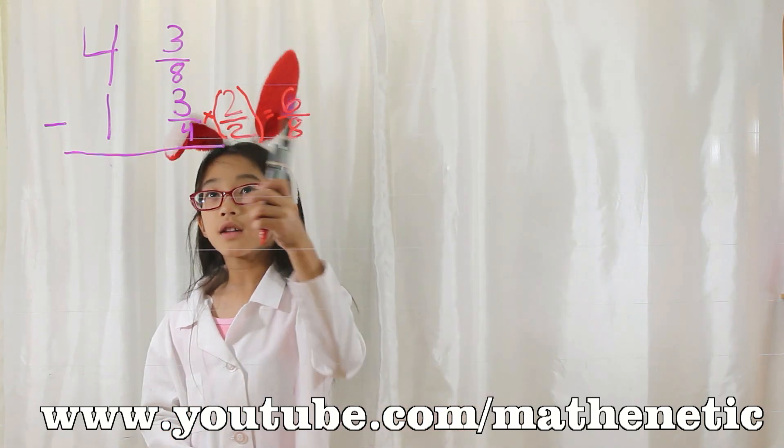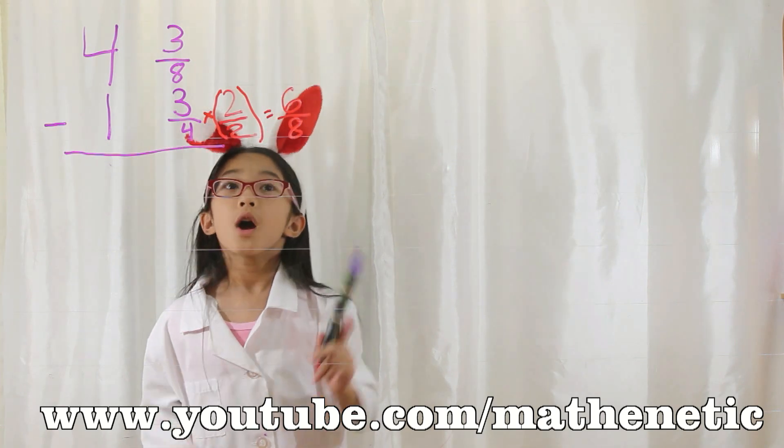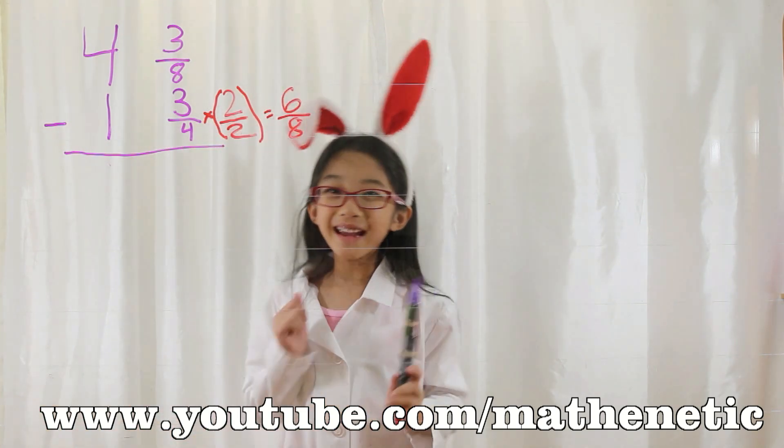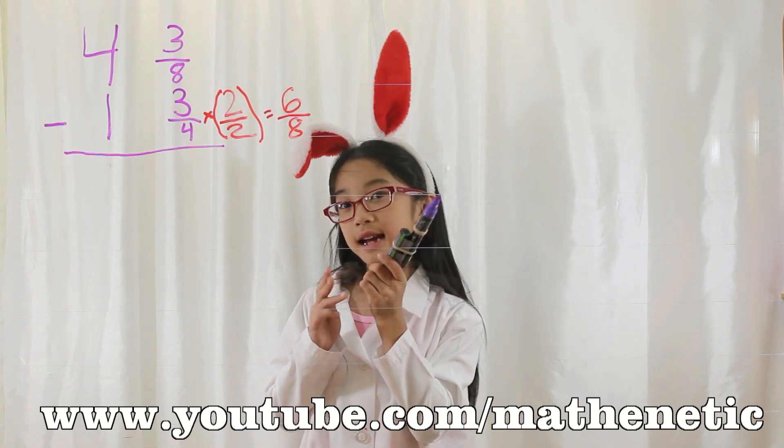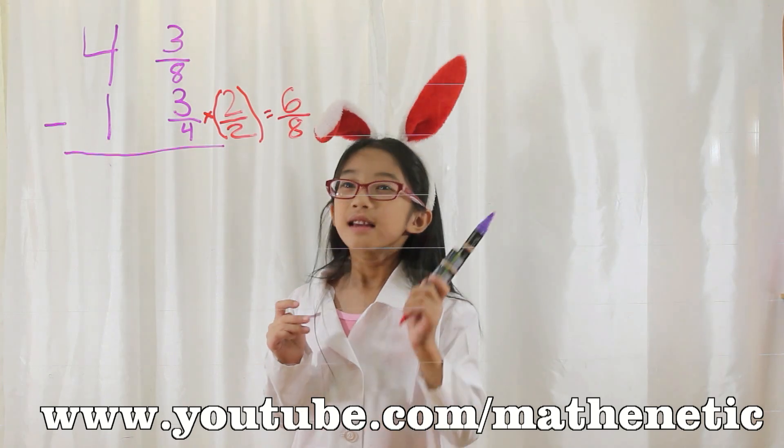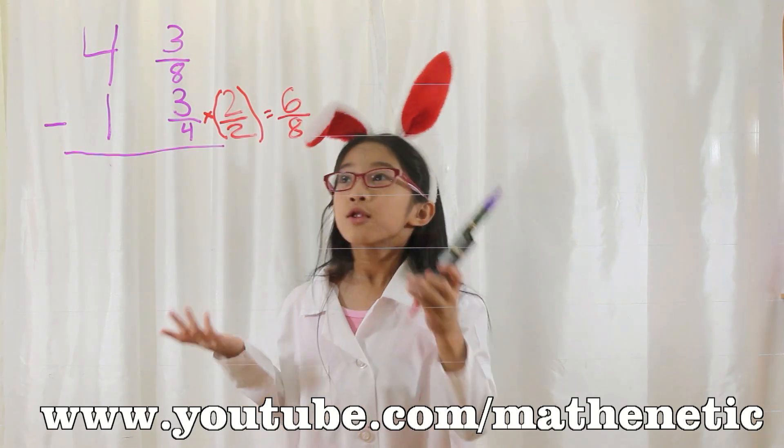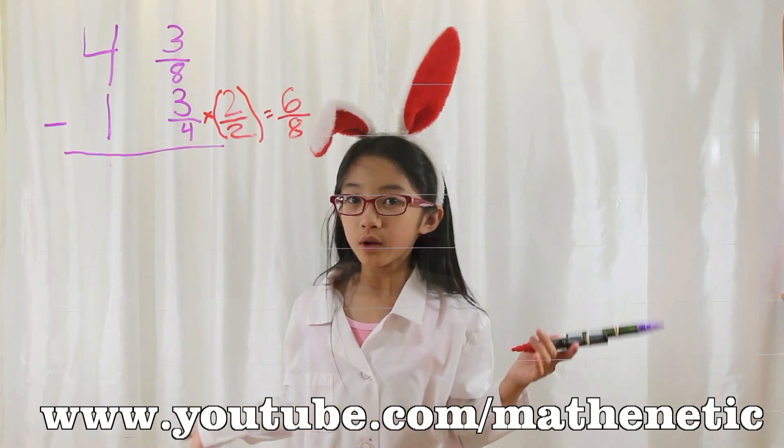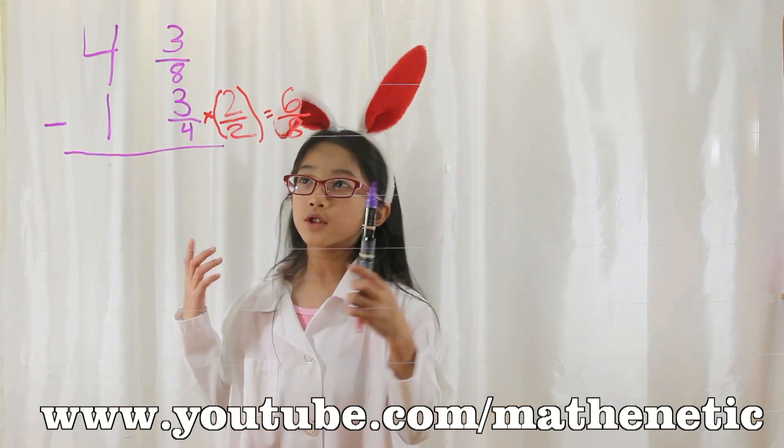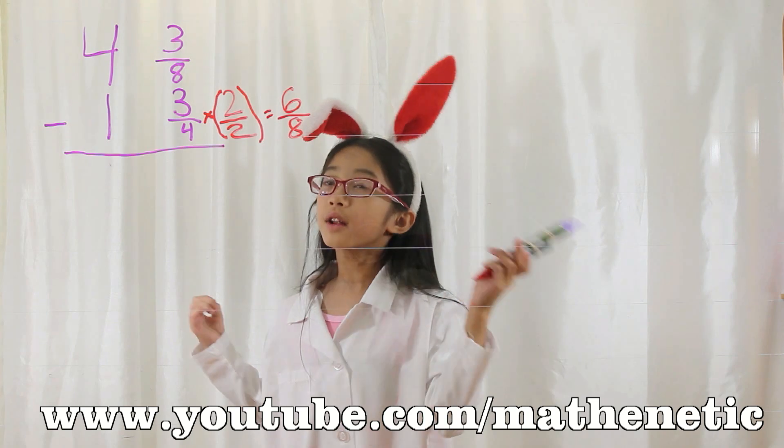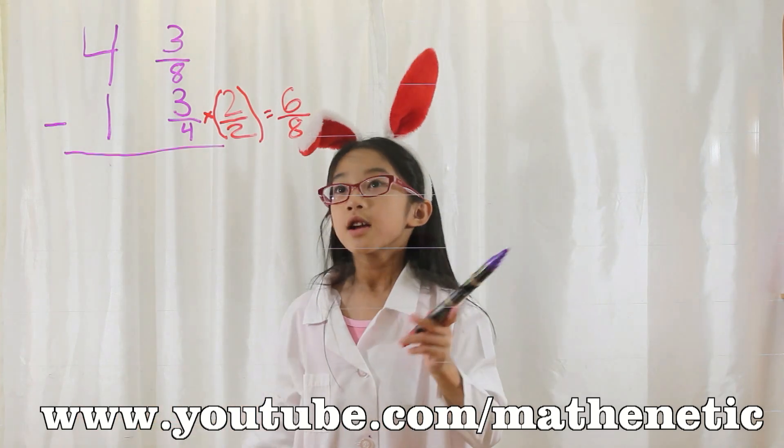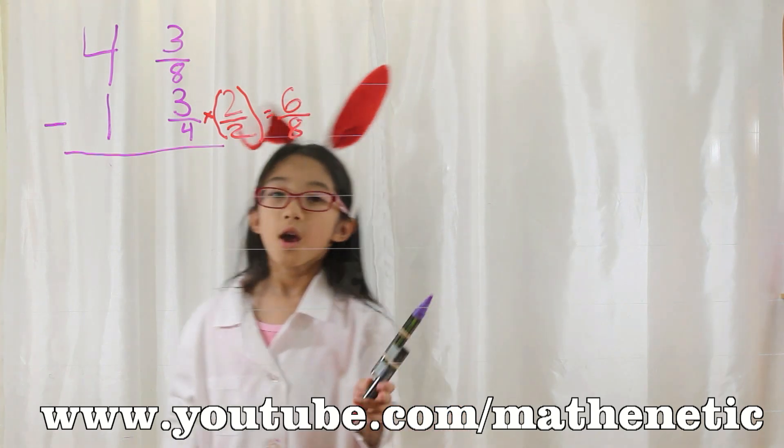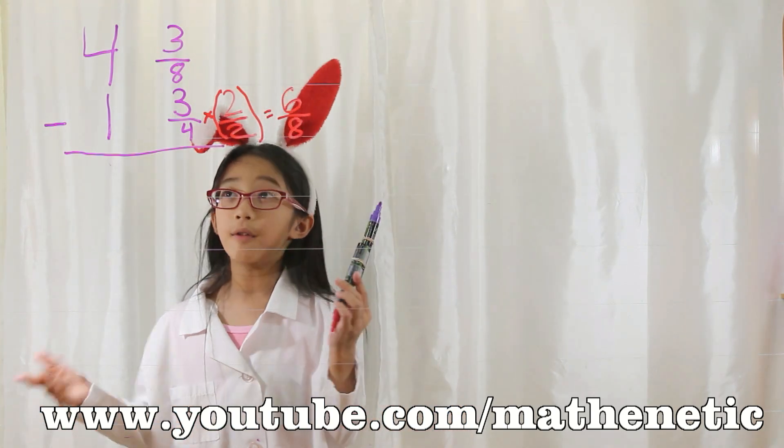Now let's look at the other fraction and 6 eighths. What do you notice? You can't subtract 3 minus 6, or 3 eighths minus 6 eighths, because 3 minus 6 would be negative 3. But you want a positive something, so you have to make a number that is bigger than 3 and bigger than 6, so you can subtract. To do that, we might have to borrow from 4.